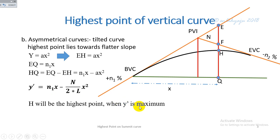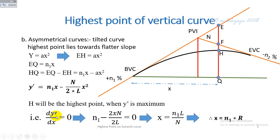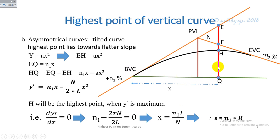This height y' is maximum at the highest point. Applying the condition for maxima — first derivative equals zero — and solving, we get: x = n1·L / n. In this way we can determine the distance from the beginning of the vertical curve at which the highest point lies.